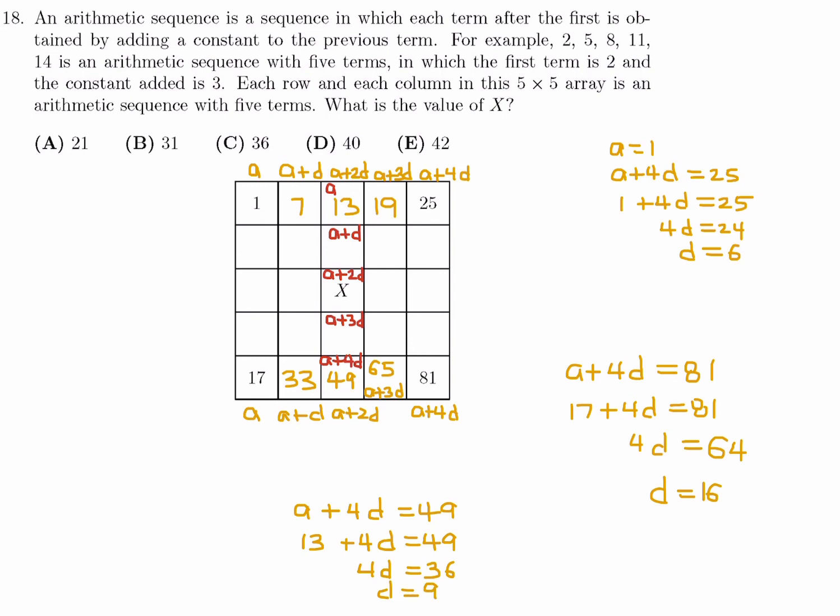So these numbers are going to be 13 plus 9, which is 22, and then 22 plus 9, which is 31. There you go. You just got X, 31. The answer is B.